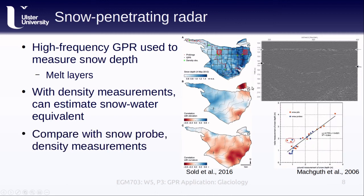In addition to density measurements taken in snow pits, we can also compare GPR-derived snow depths to the snow depths measured using snow probes — basically long metal poles that we stick down into the snow. When the probe hits the crust, you can actually feel that crust layer, and we can measure the amount of the probe within the snowpack. This gives us a way to confirm the reliability of the radar measurements.